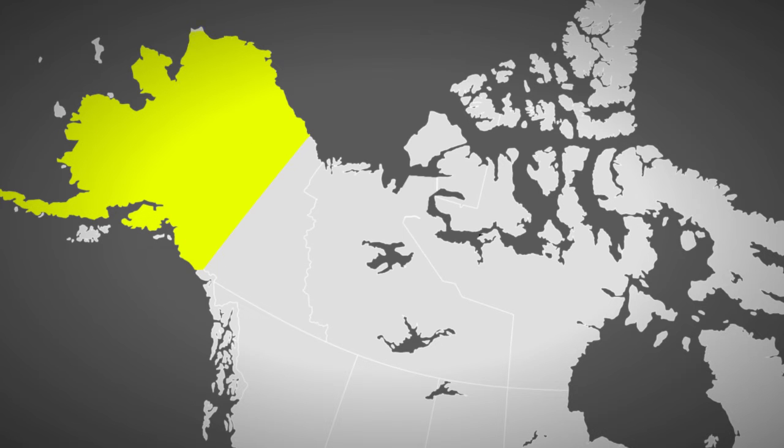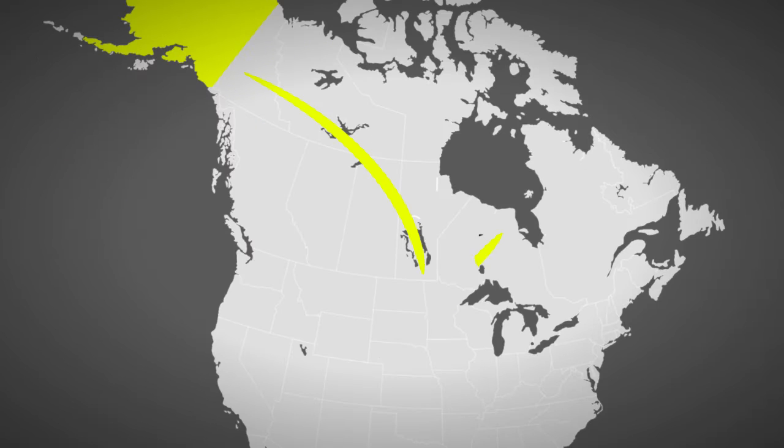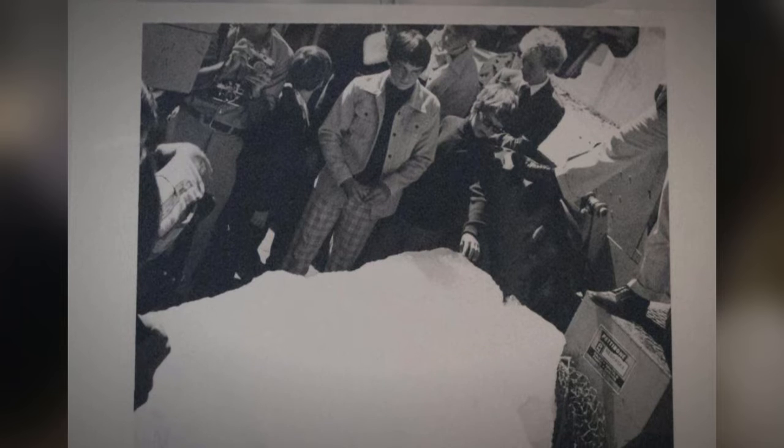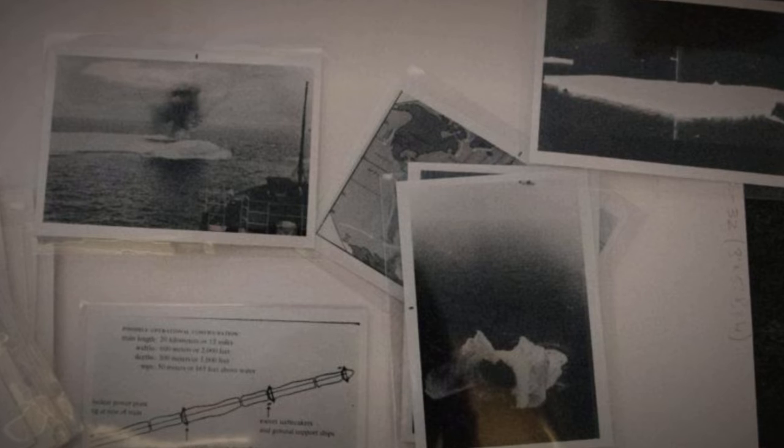In the 1970s, an iceberg was shipped from Alaska to Iowa for the sole purpose of showing that this could be done. The project was carried out by the French engineer Georges Mougin and was financially supported by a Saudi prince, Mohammed al-Faisal.